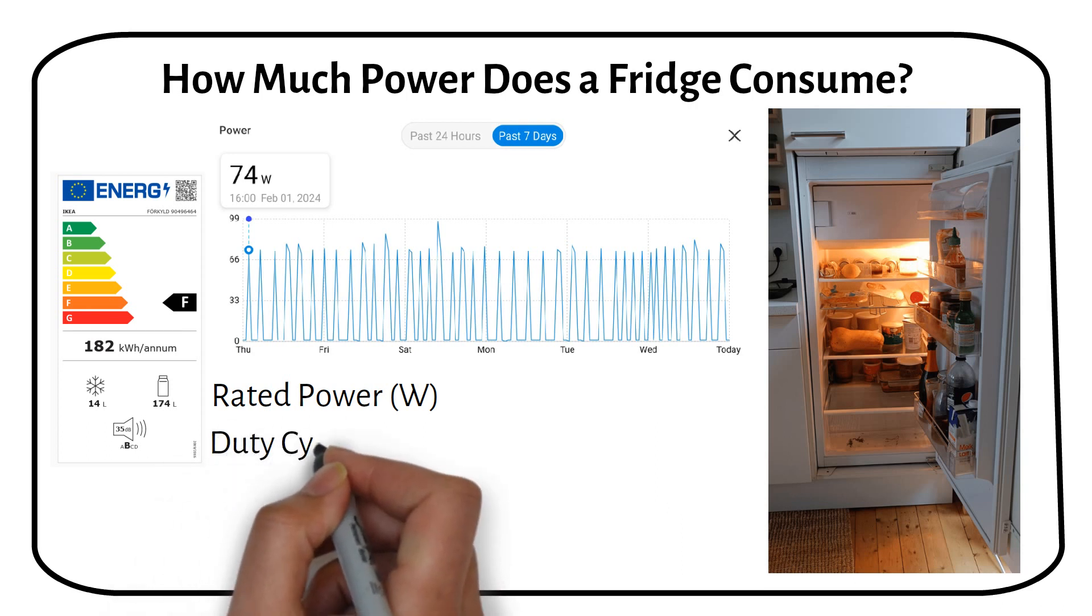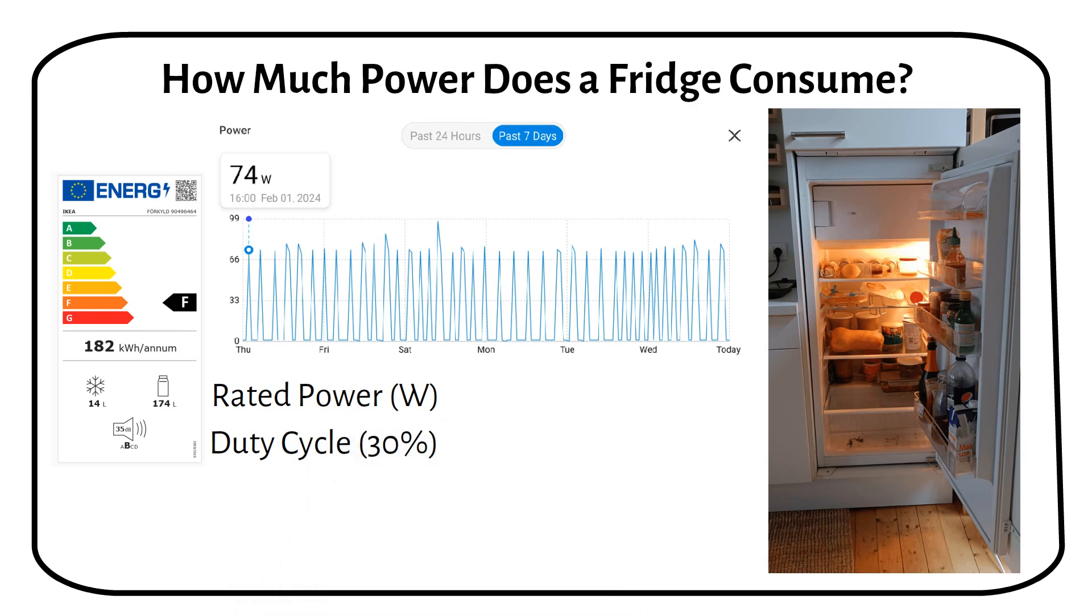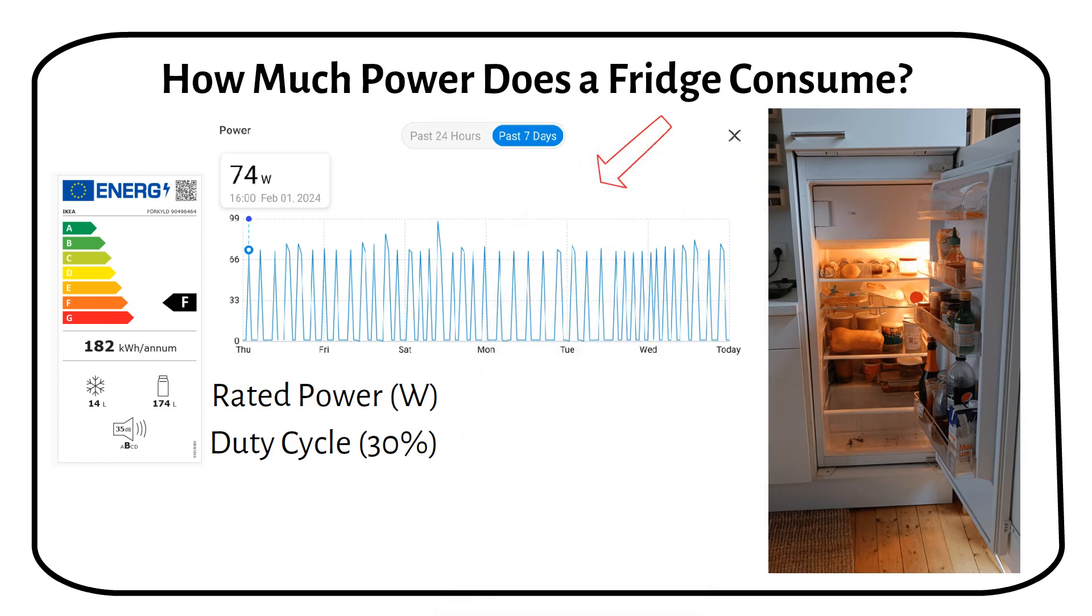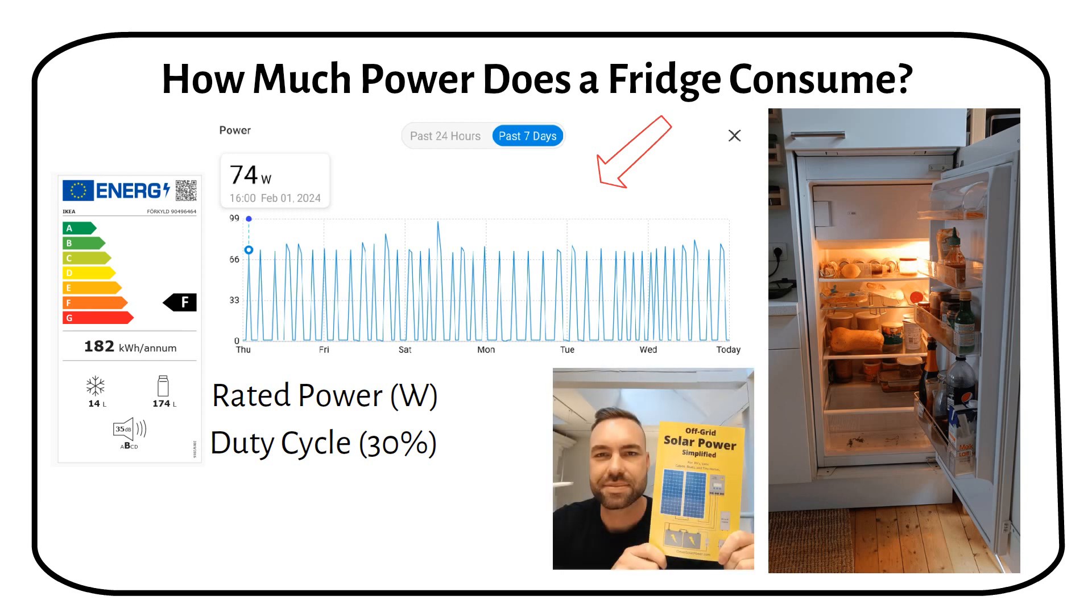Next we have the duty cycle. This term might sound technical, but it simply refers to how often your fridge runs throughout the day. It's not always on, it cycles on and off to maintain the internal temperature. By looking at the energy monitor readings for my fridge, we can see that it only draws power during certain periods, specifically when the compressor kicks in. In my book on off-grid solar, I've mentioned that a typical fridge has a duty cycle of about 30%. We will check my fridge readings to see if that holds true.